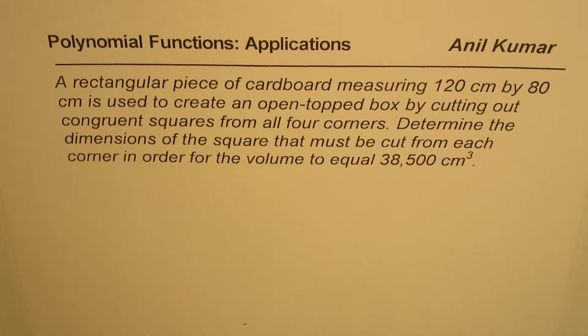The question here is: a rectangular piece of cardboard measuring 120 centimeters by 80 centimeters is used to create an open top box by cutting out congruent squares from all four corners. Determine the dimensions of the square that must be cut from each corner in order for the volume to equal 38,500 centimeter cube.